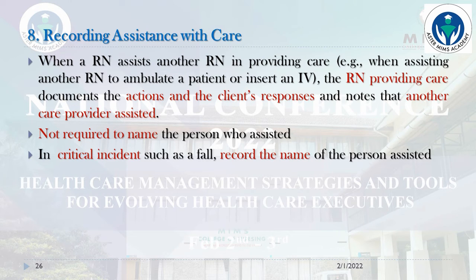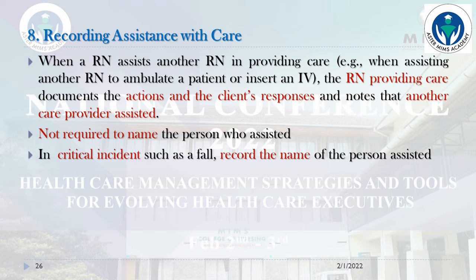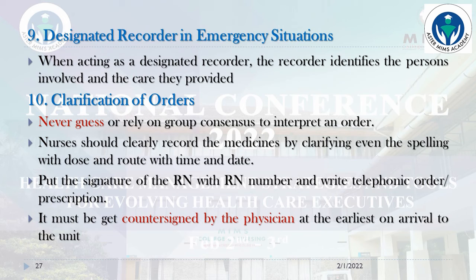Recording assistance with care is specifically important for nurses. When a registered nurse assists another RN in providing care — for example, when assisting another RN to ambulate a patient or insert an IV — the RN providing care documents the actions and the client's responses, and notes that another care provider assisted. There is no need to name the person who assisted, except in critical incidents such as a fall — in those cases, record the name of the person who assisted. When acting as a designated recorder in emergencies, the recorder identifies the person involved and the care they provided.